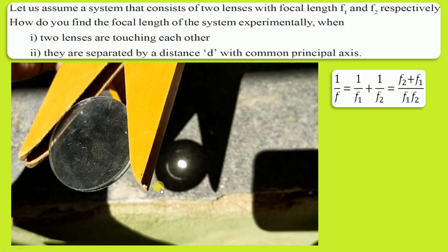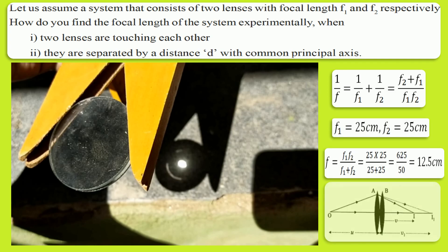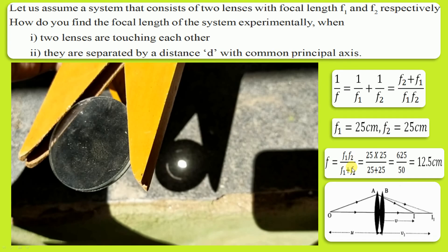For this, we have to use the formula: 1 by F is equal to 1 by F1 plus 1 by F2, which equals F2 plus F1 by F1 F2. Here F1 is 25 cm and F2 is 25 cm. So F is equal to F1 times F2 by F1 plus F2, which gives 25 into 25 by 25 plus 25, equal to 625 by 50, which is 12.5 centimeters.